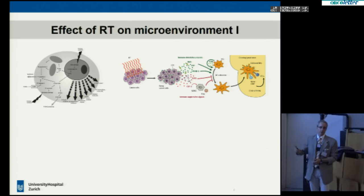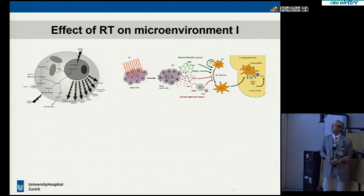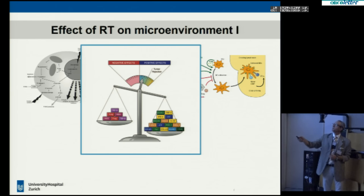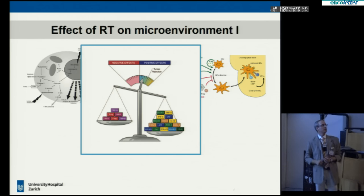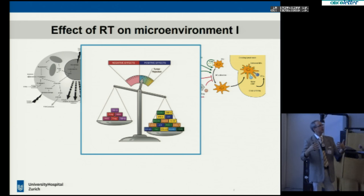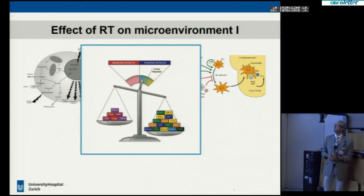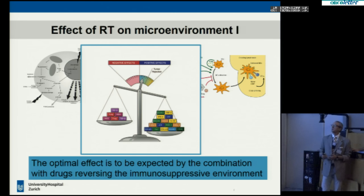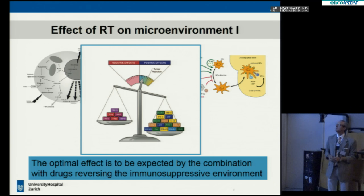We have stimulatory signals in this environment, but we also have immunosuppressive signals. If those stimulatory signals outweigh the inhibitory signals, we may have a positive effect on the local tumor environment, but it may not be sufficient for true tumor rejection or abscopal effects on non-irradiated tumor cells. So maybe the optimal effect is to be expected from the combination of radiotherapy with systemically given drugs that reverse the immunosuppressive environment present in the irradiated microenvironment.